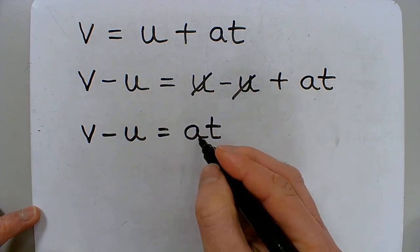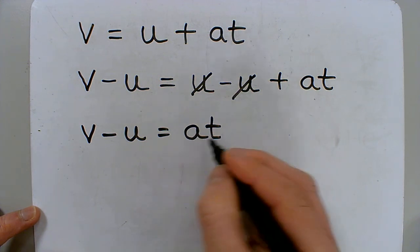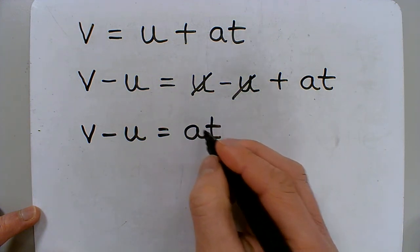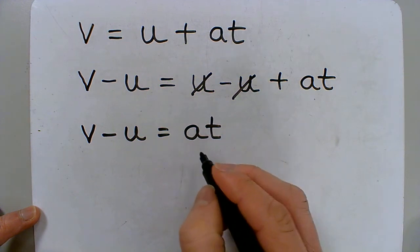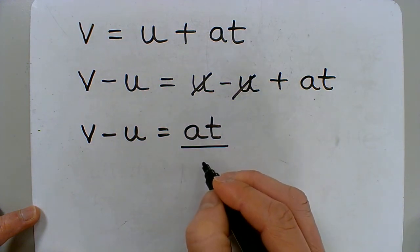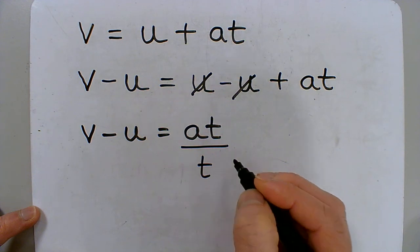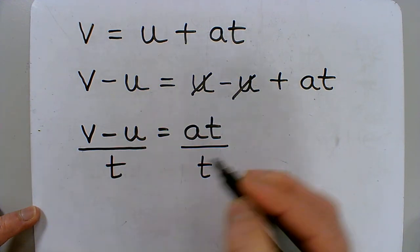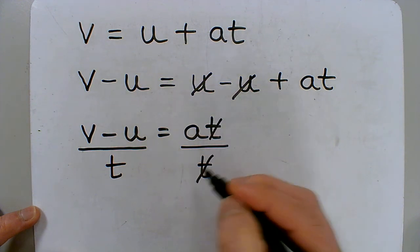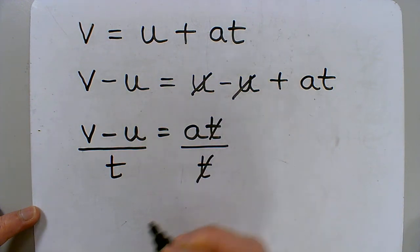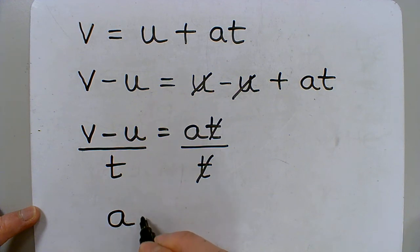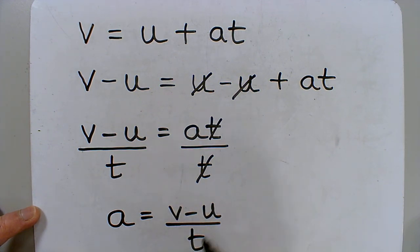And again, if I want to find acceleration, then I have to get rid of the t. And the opposite of multiplying is dividing. So I have to divide by t here. And whatever I do on one side, I do on the other. The t cancel out because the top and bottom are the same. Again, if I rewrite this equation, I have a equals v minus u divided by t, which is also the same as the change in velocity divided by t.